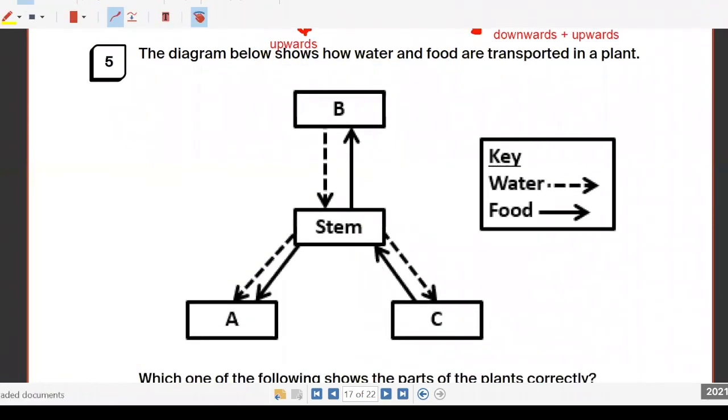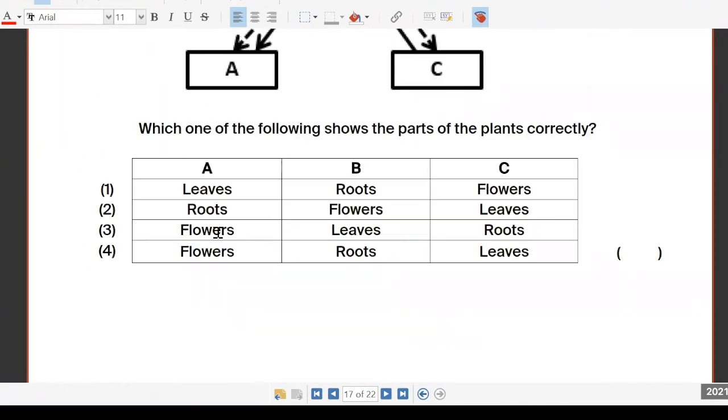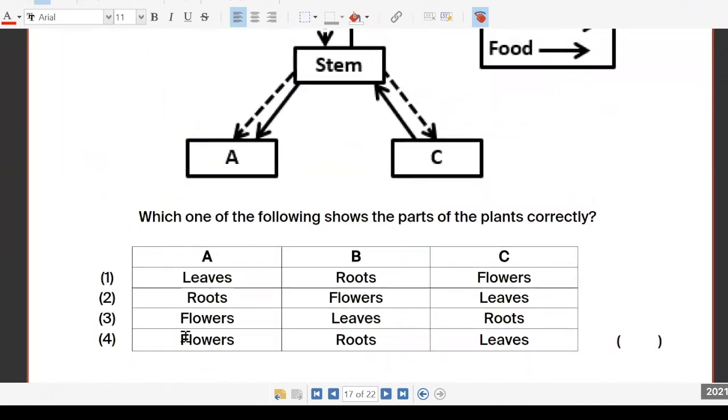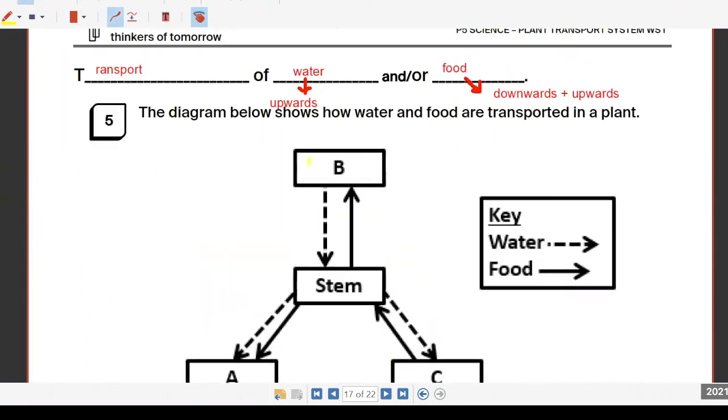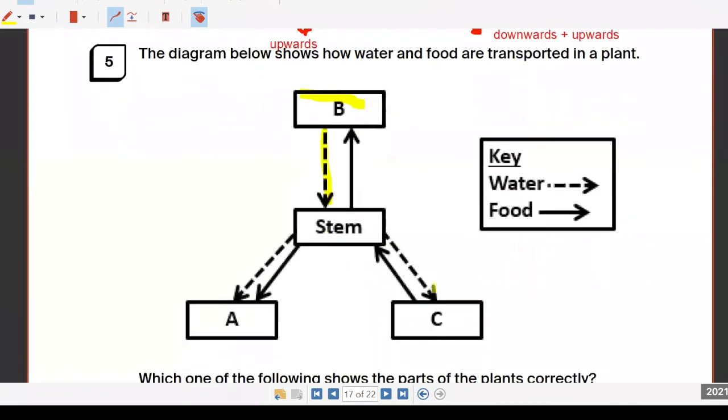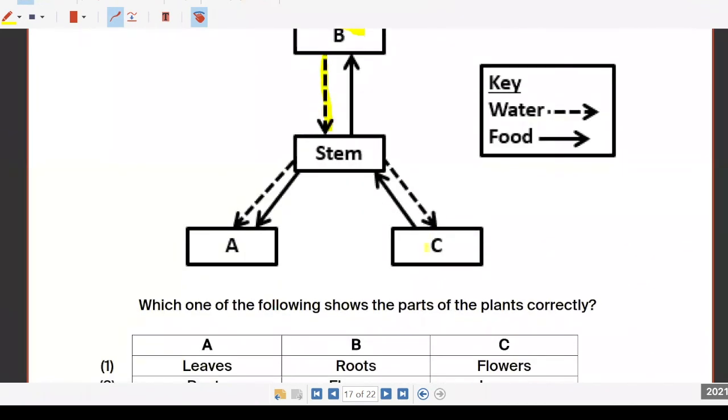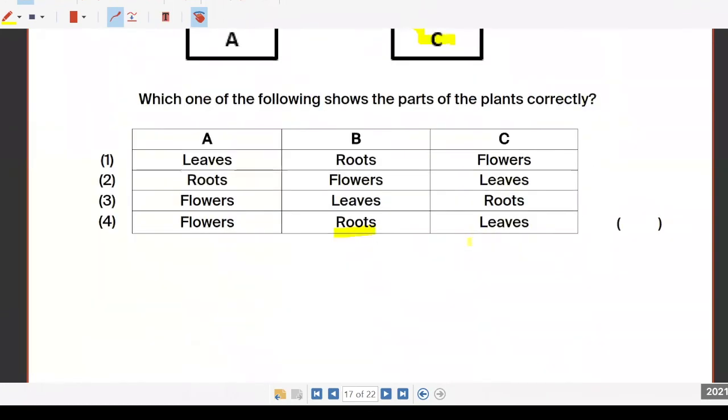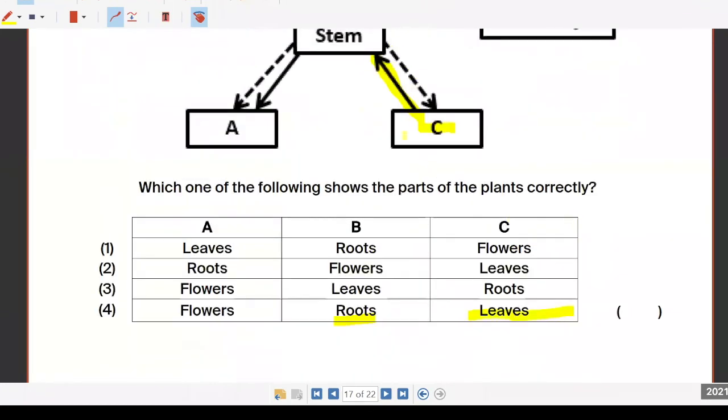Here we have the dotted lines for water. It's not easy, so what's the answer? The answer is four. That means you are saying that B is the roots because definitely B gives out the water. So B has to be the roots. The one that gives out the food, which is C, must be your leaves. Gives out the food, food is solid line. So answer is four, correct.